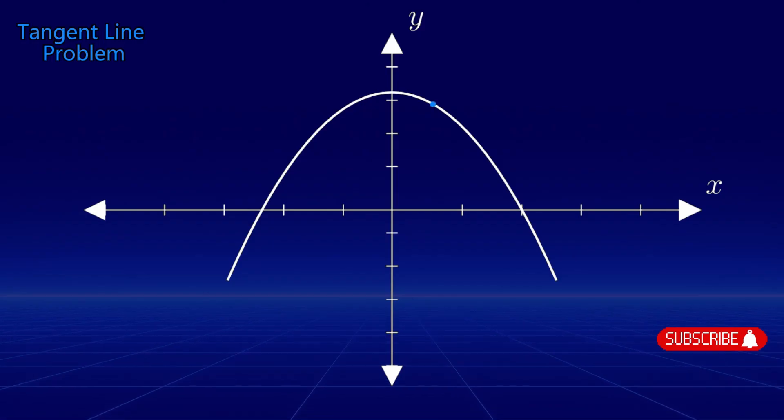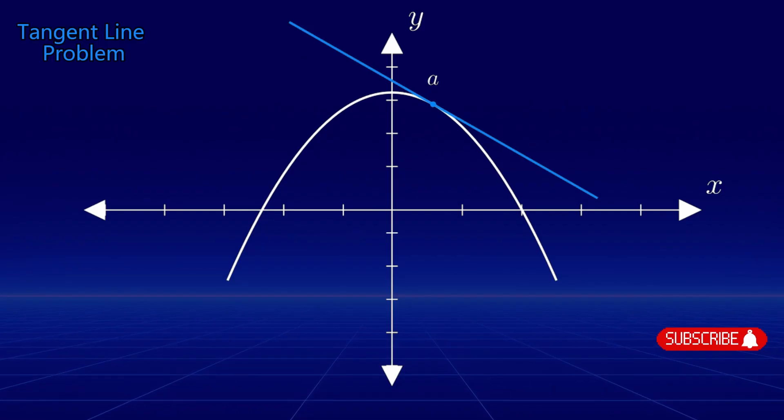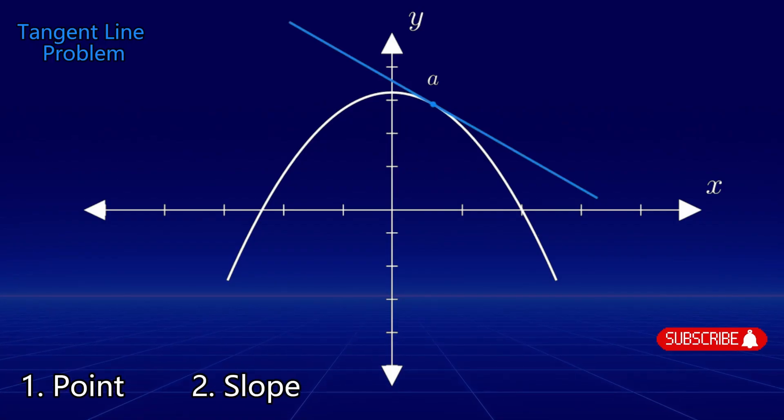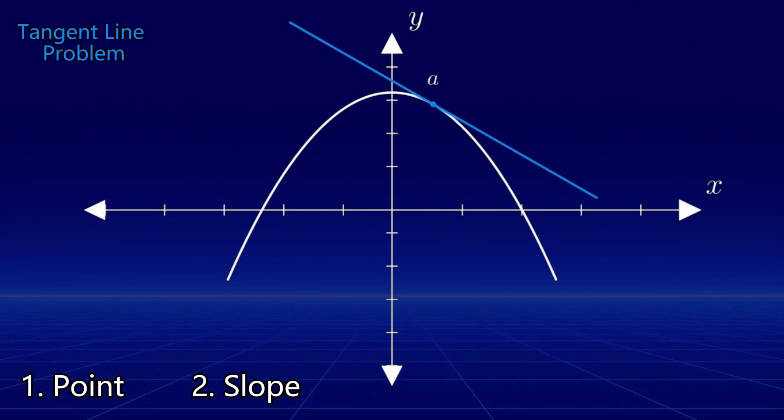Let's say we're asked to find the equation of the tangent line to the graph of a function at a. From basic algebra, we know that to determine the equation of a line, we need a point and the slope. Since the tangent line touches the function at a, we know that the line passes through this point. However, we still need to calculate the slope of the tangent line.